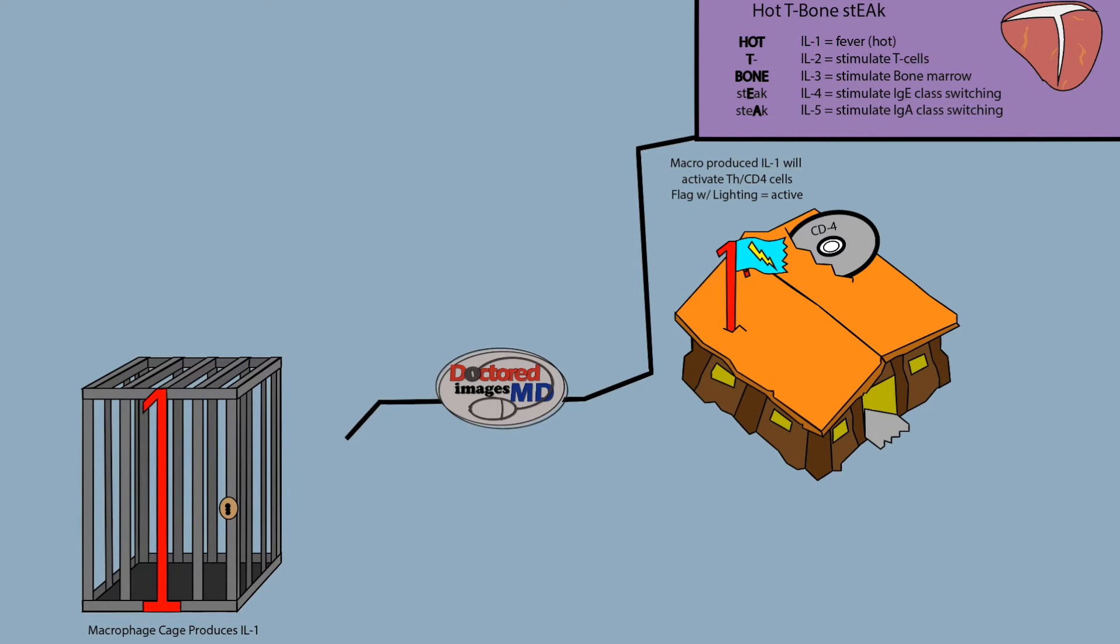Macrophages also produce IL-12, seen here as the other part of the door of the cage. You can see the 1 is another bar, and the 2 is functioning almost as a handle with a lock on the side of it. IL-12 is remembered as being produced by macrophages as IL-1-2.